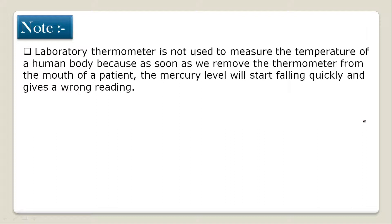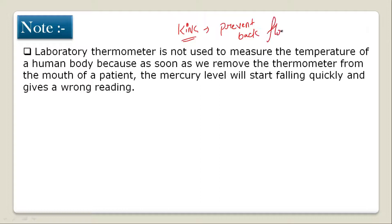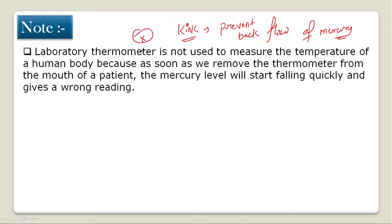We do not use the laboratory thermometer for human body temperature because there is no kink in it. In the clinical thermometer, there is a kink which prevents the backflow of mercury. Without a kink, removing the thermometer from the patient's mouth causes the mercury to fall back immediately, giving a wrong reading.